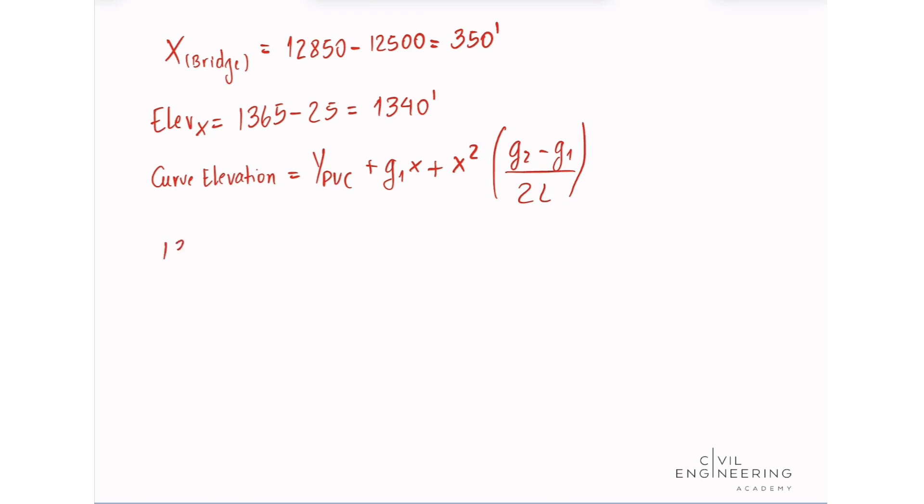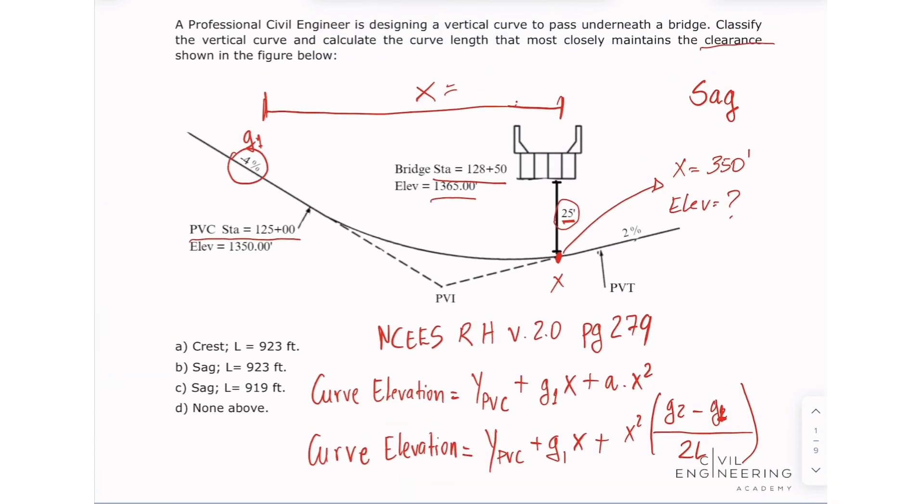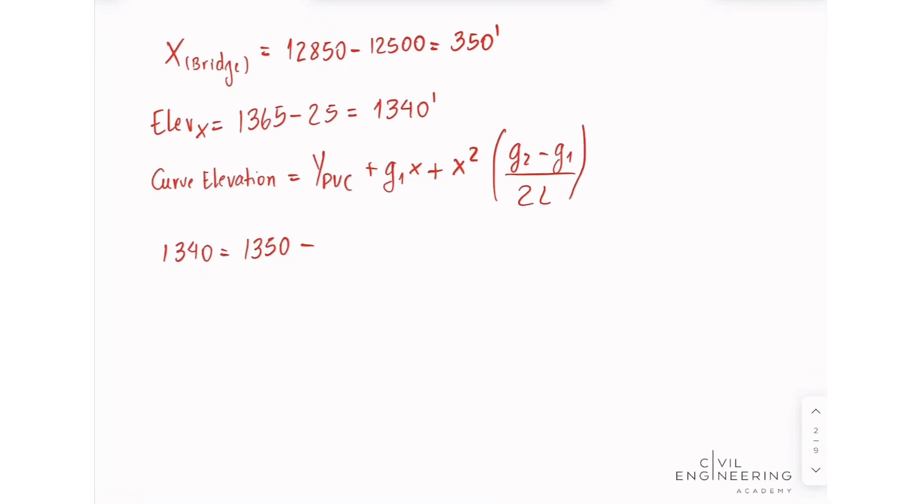So we have that 1,340 equals our elevation at the PVC, which is 1,350, minus our G1. We have, in this case, it's plus the G1, but our G1 has a negative value of minus 4%. So, we're going to put this in decimals. This is going to be minus 0.04 times 350 plus 350 squared multiplied by our G2, which is positive, this is 2%, so 0.02 minus our G1, which is minus 0.04, divided by 2L.